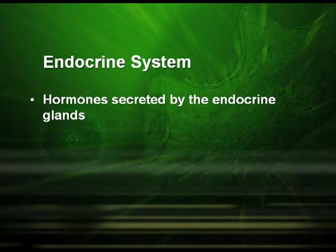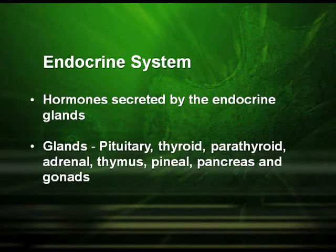The endocrine system includes hormones secreted by the endocrine glands. These include the pituitary, thyroid, parathyroid, adrenal, thymus, pineal, pancreas and gonads.